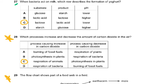Question 27: When bacteria act on milk, which row describes the formation of yogurt? The substrate is lactose, the product is lactic acid, and the pH is lower. Bacteria are added, they release enzymes, enzymes act on the lactose, lactose is converted to lactic acid, this lowers the pH, and this causes the protein to coagulate.